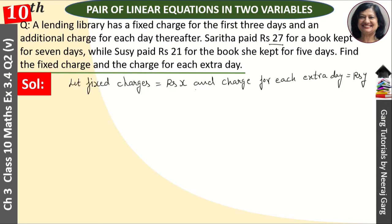Sarita paid rupees 27 for a book kept for 7 days. For 7 days, she paid 27 for the book. So, fixed charges are X. Fixed charges were for the first three days. Total 7 days. So, 4 extra days. So, 4Y meaning that for 4 days we have extra charges. So, X plus 4Y is equal to 27. This is our first equation.